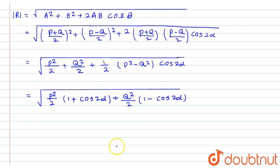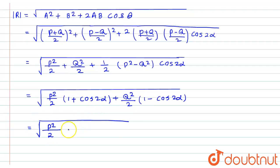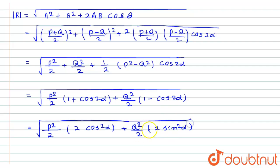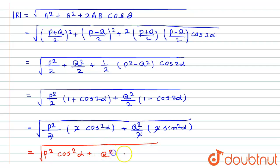Now using trigonometry: one plus cos 2 alpha equals two cos squared alpha, and one minus cos 2 alpha equals two sin squared alpha. Substituting these, p squared by two times two cos squared alpha gives p squared cos squared alpha, and q squared by two times two sin squared alpha gives q squared sin squared alpha. The two's cancel and we finally get under root of p squared cos squared alpha plus q squared sin squared alpha.